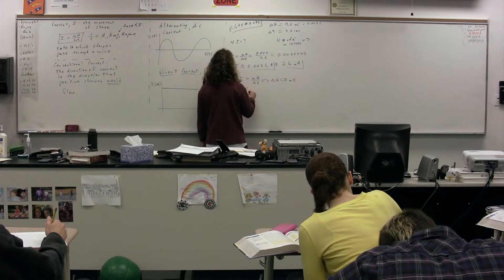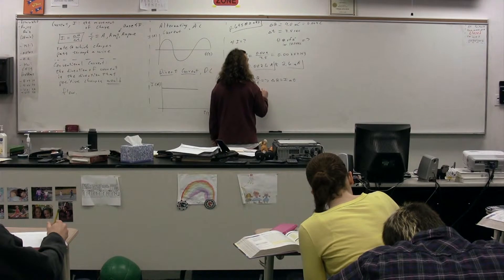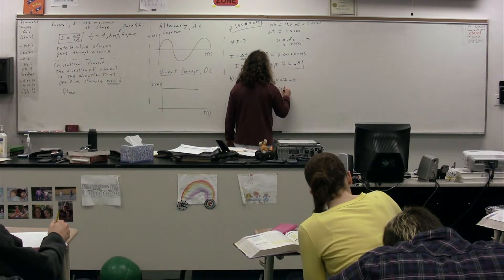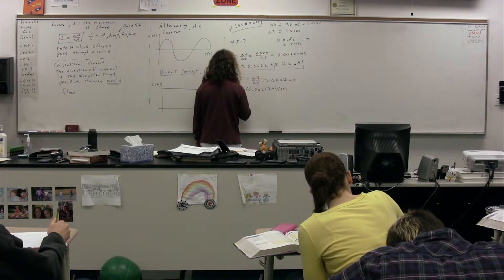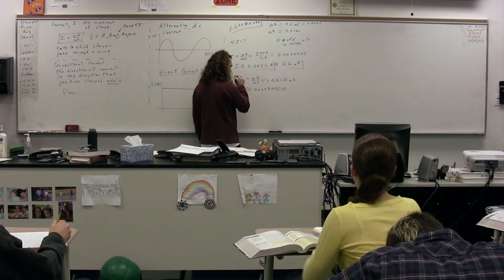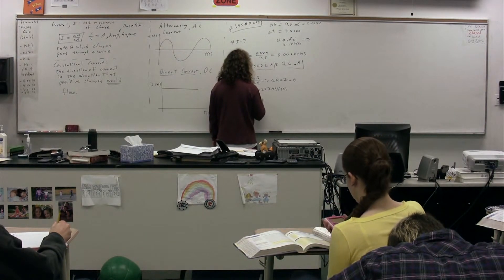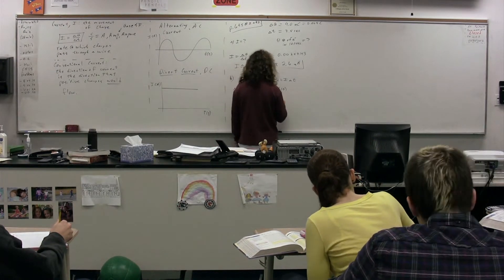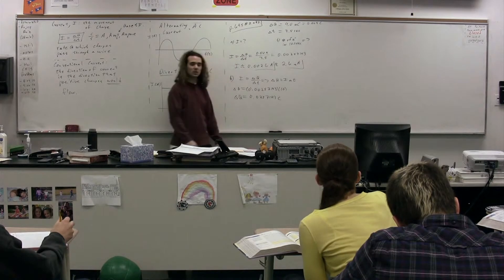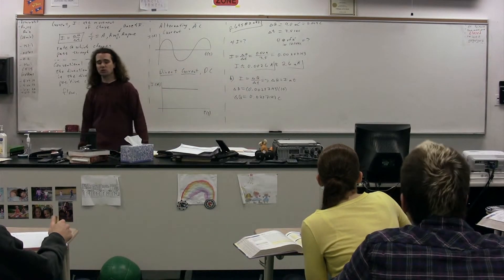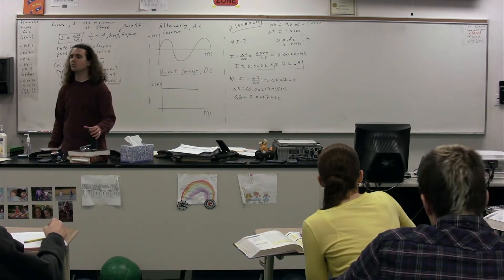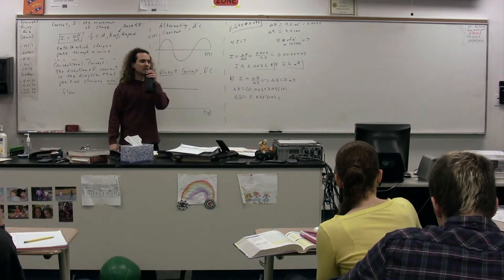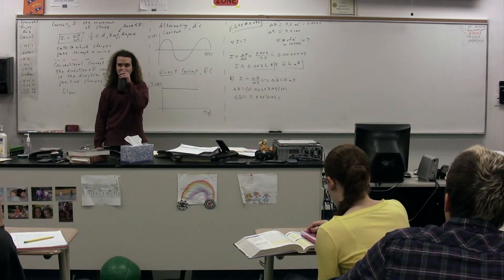So delta q, the change in charge, is equal to the current, 0.00257143 multiplied by the time, the change in time, which is 10 seconds. So the charge that passes through the wire in 10 seconds is going to be 0.0257143 Coulombs. This gets us close. We now know the number of Coulombs that pass through the wire. I want to know the number of electrons that pass through the wire in 10 seconds.